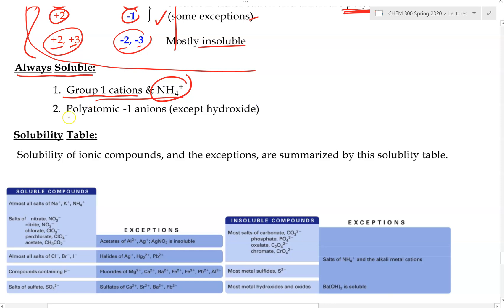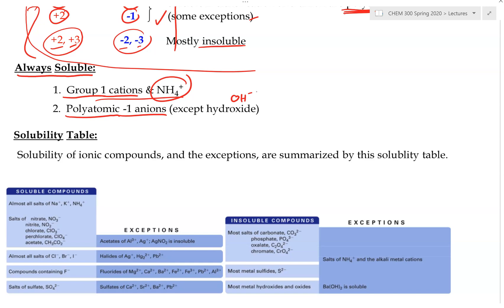Polyatomic anions that are -1 also tend to always be soluble, with the exception of hydroxide. The reason is that a polyatomic ion is large in size, and at -1 it has a low charge — so low charge plus large size means it's always soluble. Hydroxide is the exception because it is a pretty small ion.